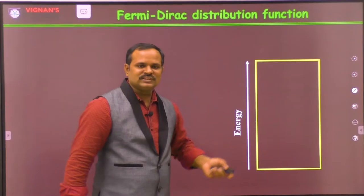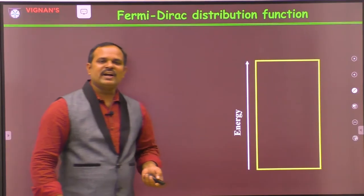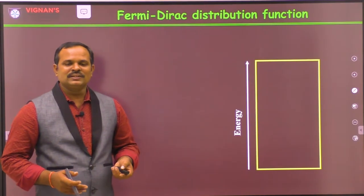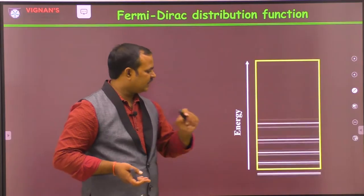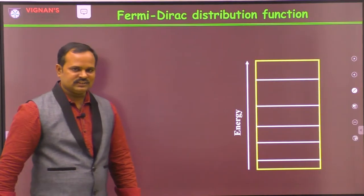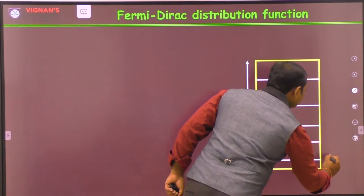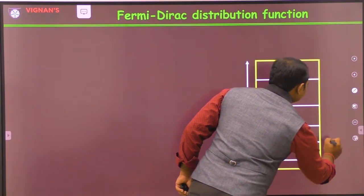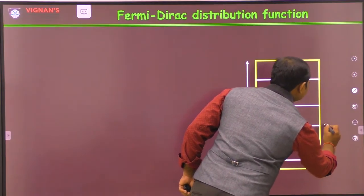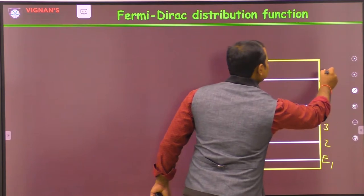For example, consider a quantum mechanical system. In a quantum mechanical system, the energy levels are discrete. These are all discrete energy levels with energies E1, E2, E3, E4, E5, and so on.